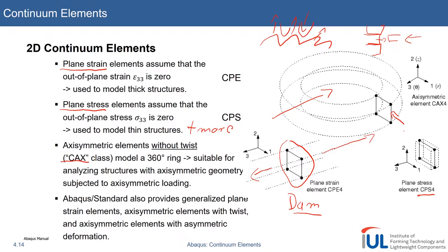Nowadays, Abaqus provides you even more elements than this, especially including axisymmetric elements with a twist and with asymmetric deformation. These are only used for very special applications. I will talk about symmetry later on, so I will give you some more comments. I can add plus something like chambering, which you often see in metal forming, where you control the material flow.